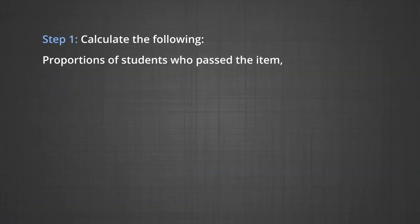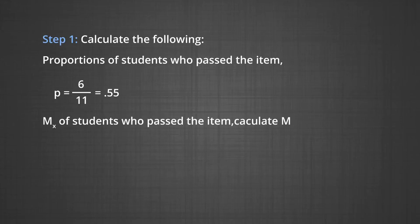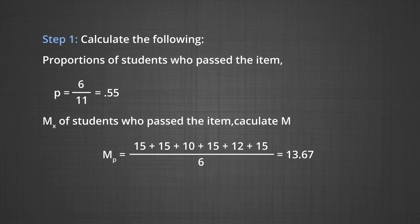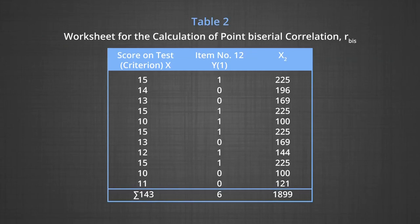Example: scores obtained by 11 students on the total test and item number 12 of the test are given in table 2. Calculate the item-total correlation. The steps are: first calculate proportion of students who pass the item, p = 6/11 = 0.55. Mean of students who pass the items is (15+15+10+15+12+16)/6 = 13.67. Table 2 shows the worksheet for calculation of R_pbis.